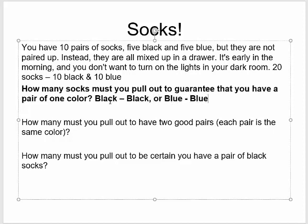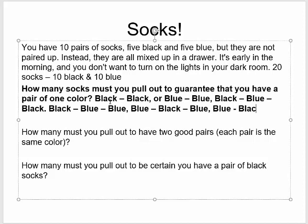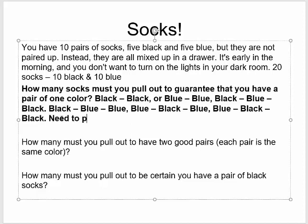Or you could pull blue then blue — you got it right there. But you could go black then blue. Then does it matter which one you pull from the sock drawer? No. You could go black, blue, blue — which works out. Or blue, black, blue — still a pair. Or blue, black, black — you have it. So to guarantee a pair of one color, you're going to need to pull three socks. That will automatically guarantee that no matter what, if you pull out three socks, you will get a pair.